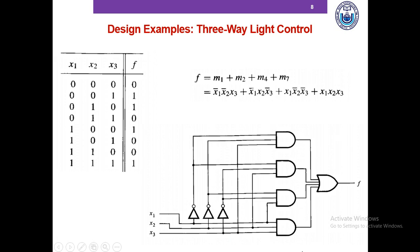Let's compute the cost. The number of gates is 8 (including NOT gates and AND/OR gates), and the number of inputs to gates counts up to 19. The cost of the circuit is 27. The cost of the SOP implementation for 3-way light control is 27.